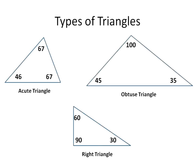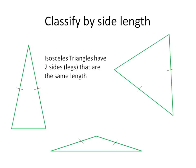An obtuse triangle — only one angle needs to be more than 90 degrees. For our example here, 100 degrees is more than 90, so that would be an obtuse triangle. As long as you remember acute, obtuse, or right angles — that's why we reviewed them at the beginning — you'll be able to remember what the triangles are when classifying them by their angles.